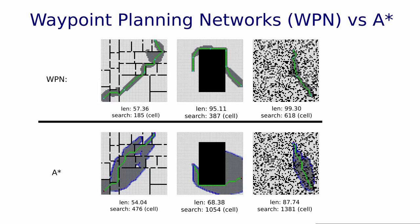WPN is compared with A-star on synthetic maps here. Note that in all cases, WPN has significantly smaller search spaces while generating near-optimal paths.